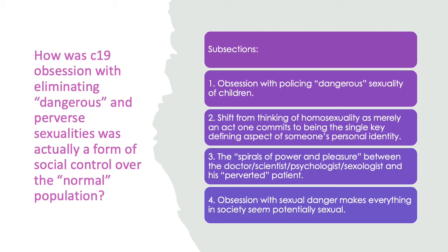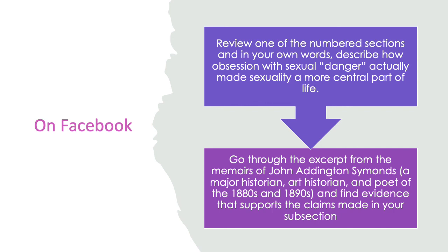On Facebook, I'd like you to pick one of those numbered sections and in your own words describe how the obsession with sexual danger actually made sexuality a more central part of life in the Victorian period. Then I'd like you to go through the excerpt from the memoirs of John Addington Symonds — an historian, art historian, and poet — and find evidence that supports the claims made in the subsection you're focusing on from Foucault. Thank you for listening to this mini-lecture, and as always contact me if you have any questions. Thanks very much, bye.